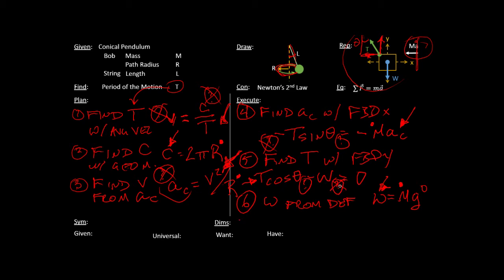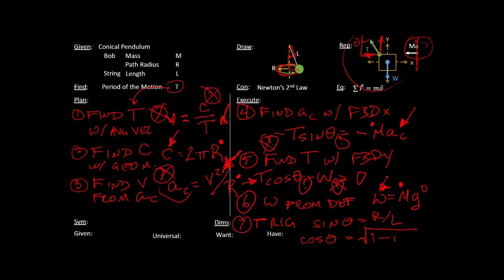We're dealing with SOHCAHTOA here. Sine theta equals R over L — we don't need to find theta itself, we just need sine theta equals R over L. And then cosine theta equals the square root of 1 minus sine squared theta, so the square root of 1 minus R squared over L squared. With that plan, I've gotten rid of all the unknowns. I started with what I knew and kept going until I had all the equations needed to solve this problem.